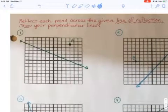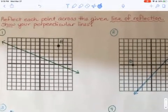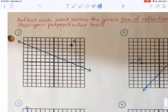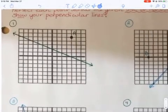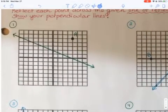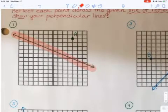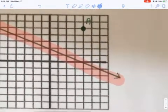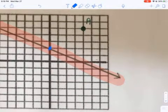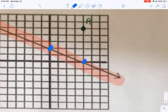I'm going to show you how you can easily reflect a point across a given line of reflection and show your perpendicular line. So what I'm going to do is look at my line of reflection here for number one, and I'm going to identify my slope. In order to do that, I've got to isolate a couple of points here.